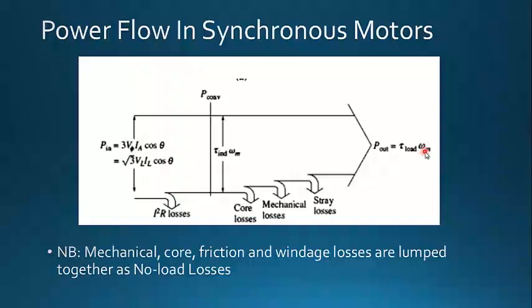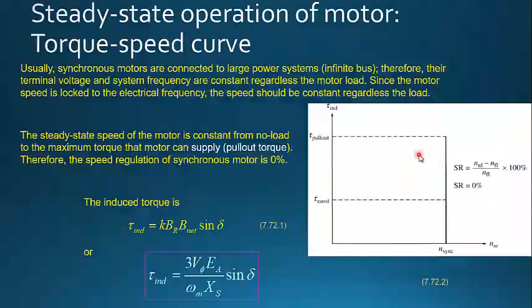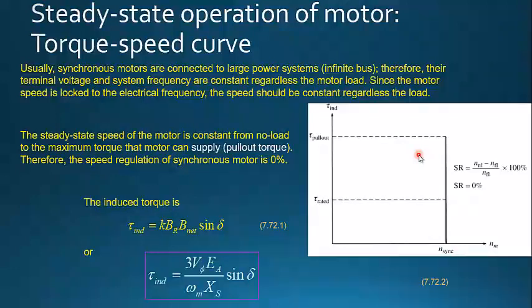We discussed all these things in the synchronous generator, so I believe you all remember them. The only difference here is the direction of power flow. Now let's look at a new topic: the steady-state operation of synchronous motors — specifically what happens to the speed when you increase the torque. Usually synchronous motors are connected to a large power system, referred to as an infinite bus, which has a fixed constant frequency and constant terminal voltage.